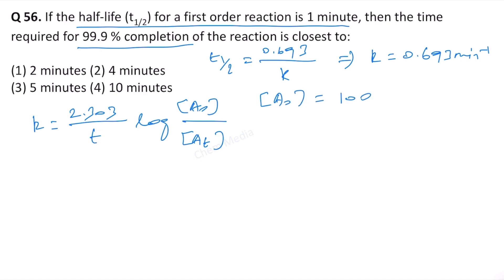Initially the concentration of A0 will be 100. Therefore, when t is equal to t_99.9%, what will happen to At? At will be 100 minus 99.9, therefore At will be simply 0.1. Let's write it as 1/10.